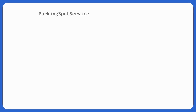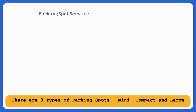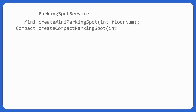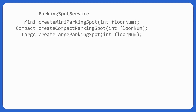Let's discuss the parking spot service. The first responsibility it would have is to create a parking spot. Since there are three types of parking spots, the first approach that would strike your mind is to have three methods — to create mini parking spot, compact parking spot, and large parking spot. All three methods would take a floor number and create a parking spot, but all the work is redundant.